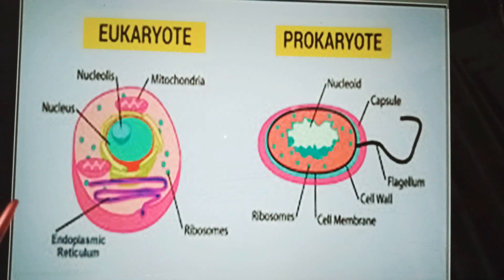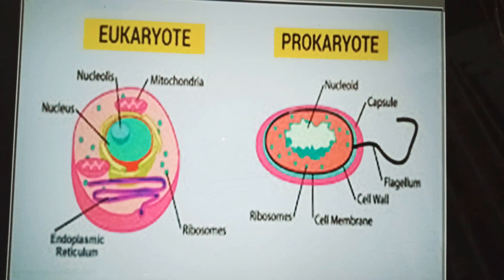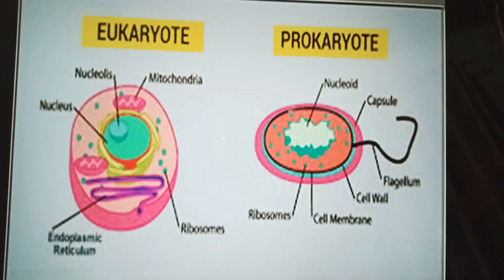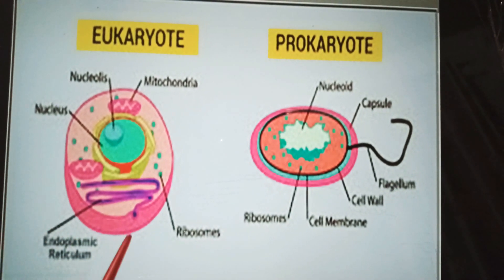The ribosomes of eukaryotic cells are larger in size as compared to the ribosomes of the prokaryotic cell.